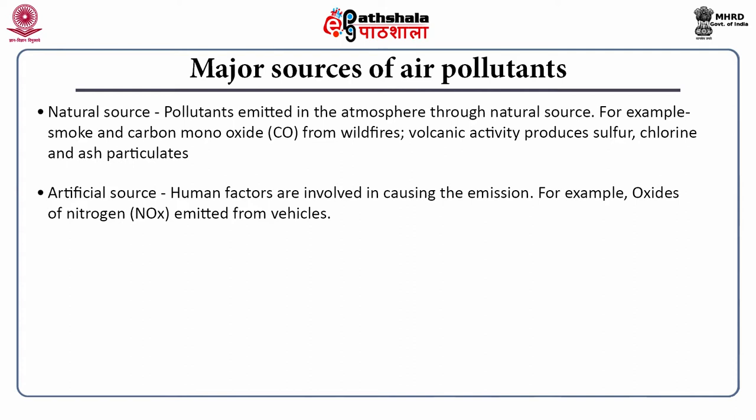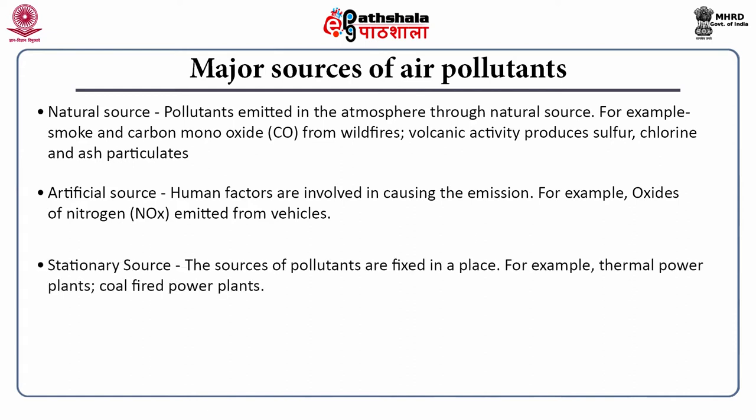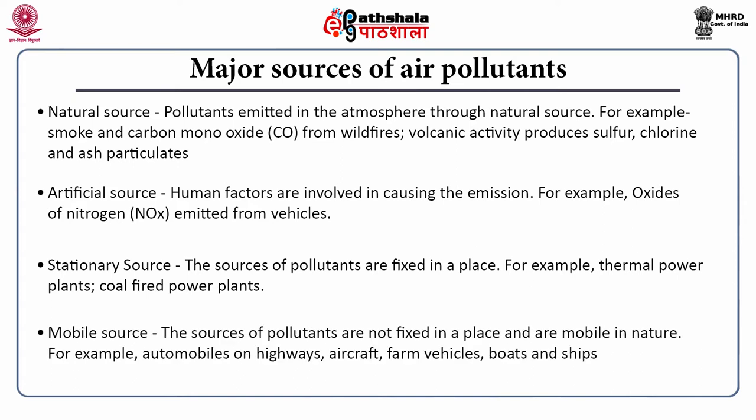Based on whether the source is stationary or mobile, pollutants can be of two types: stationary source and mobile source. Sources fixed in a place are stationary — examples include thermal power plants and coal-fired power plants. Mobile sources are those not fixed in a place — examples are automobiles on highways, aircraft, farm vehicles, boats and ships, mainly the transportation sector.